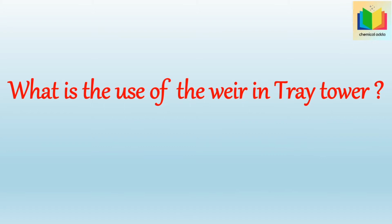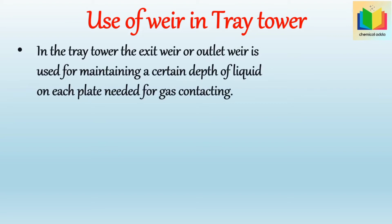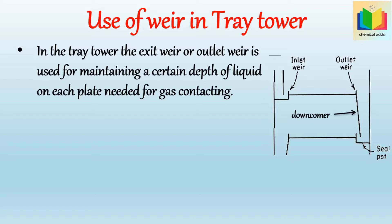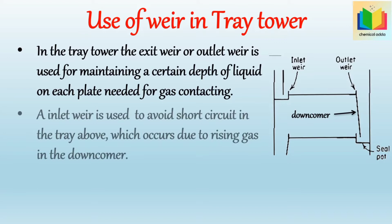What is the use of a weir in a tray tower? In the tray tower, an exit weir or outlet weir is used for maintaining a certain depth of liquid on each plate needed for gas contacting. An inlet weir is used to avoid a short circuit in the tray above, which occurs due to rising gas in the downcomer. However, an inlet weir may result in a hydraulic jump of the liquid and is not generally recommended.